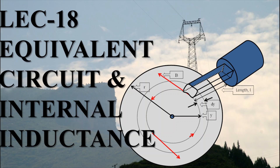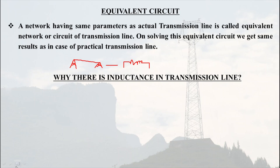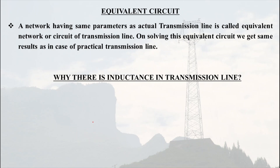First we start with equivalent circuit. A network having the same parameters as an actual electrical network is called an equivalent network or equivalent circuit. To understand it more clearly, suppose there is a transmission line and if a 200 megawatt load is injected, then current increases by 300 ampere in that line. Suppose we create a circuit diagram of that transmission line and check that circuit by applying the same 200 megawatt. If we get the same 300 ampere in the circuit, it means that circuit is the equivalent circuit of the transmission line. On solving this equivalent circuit we get the same results as in case of the practical transmission line — that's why it is called an equivalent circuit.